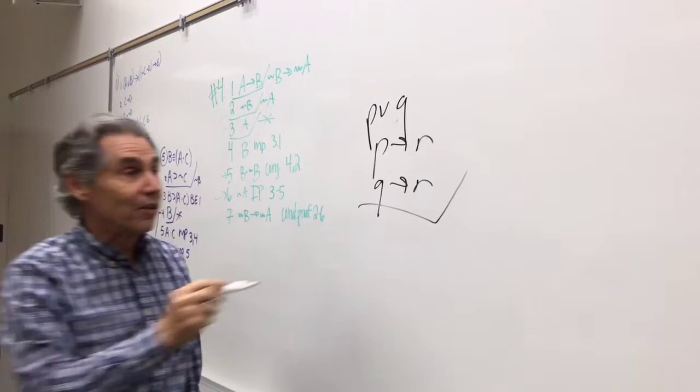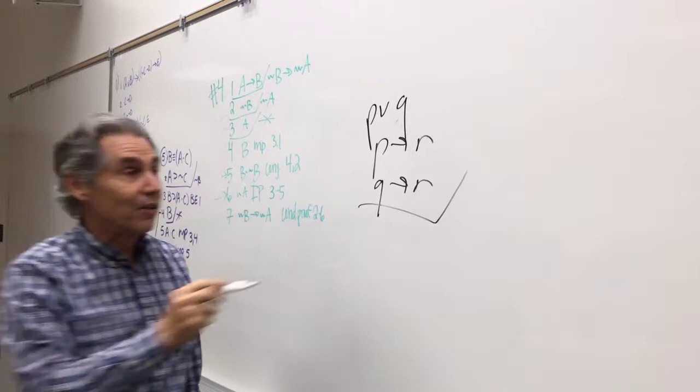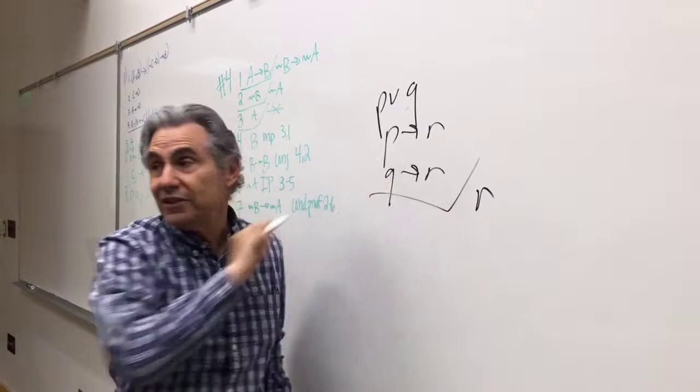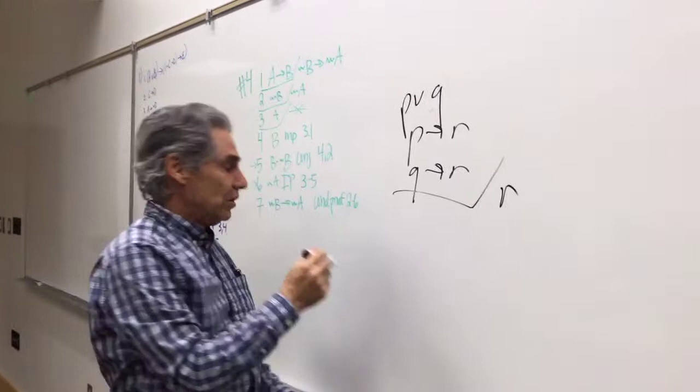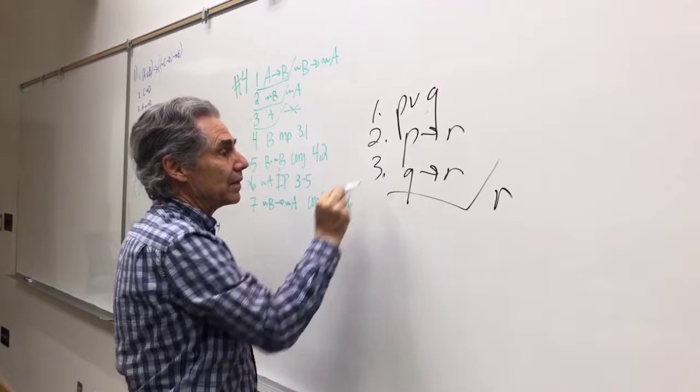What follows from that? It follows R. This is called dilemma. You went to the left or to the right — if he went to the left he's dead, if he went to the right he's dead, so he's dead. That's the dilemma. Now the first task for the assignment is to prove this — how are you going to prove it?